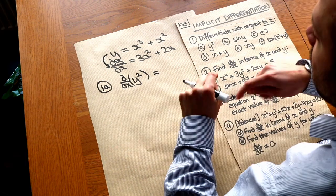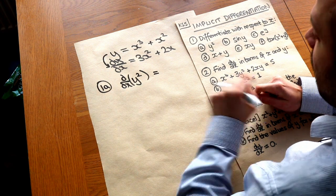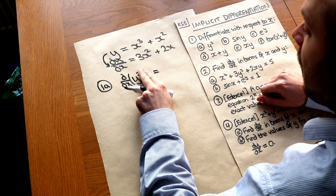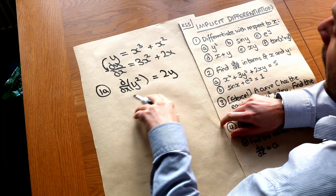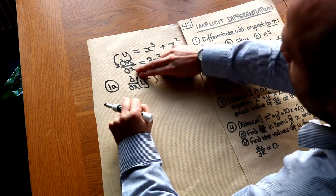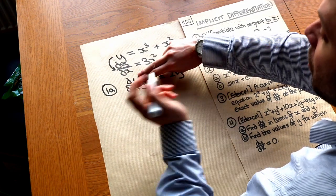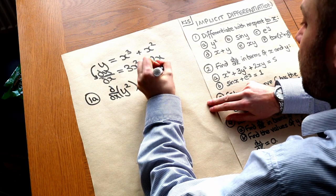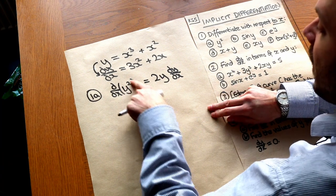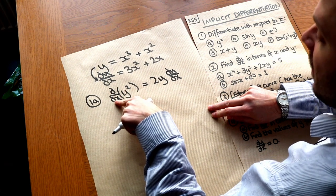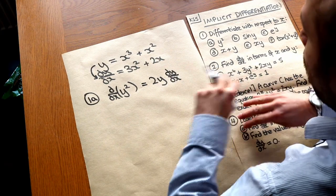The way we do this is using the chain rule — the outer function differentiated times the inner function differentiated. The outer function is something squared. We know that differentiates to 2 times that something, so we write 2y. But then by the chain rule we differentiate the inner function. The inner function here is y. What happens when we differentiate y with respect to x? Well, y differentiates to dy over dx by definition, so we need to multiply by dy over dx. The simple way of remembering this: if we differentiate an expression in y with respect to x, we differentiate it like we normally would — so y squared becomes 2y — but we just have to slap a dy over dx on the end because of the chain rule.